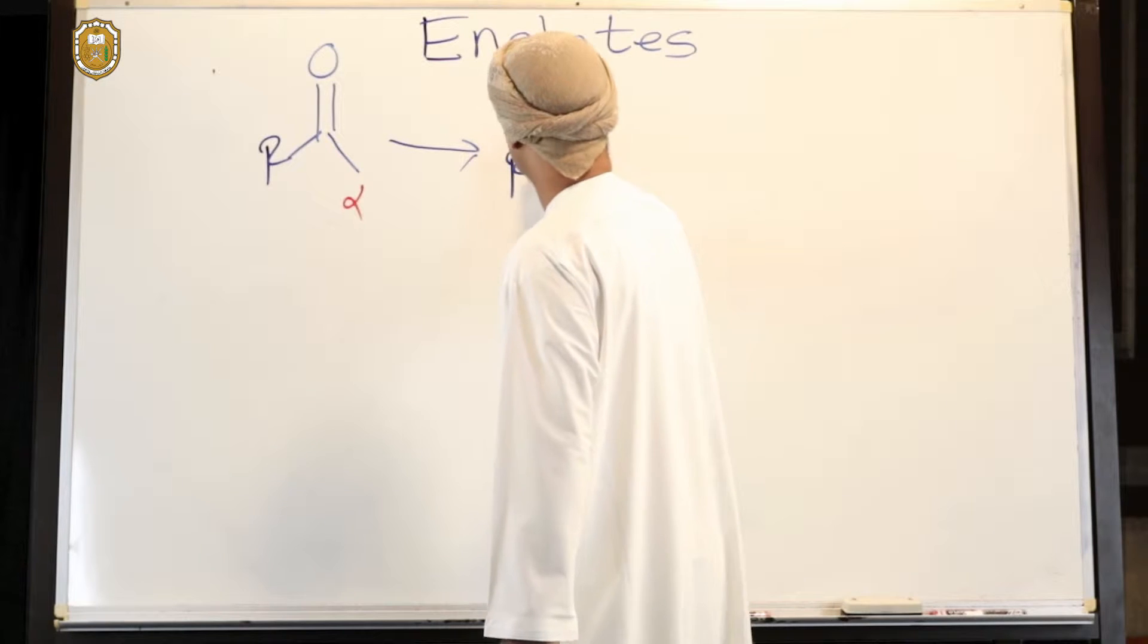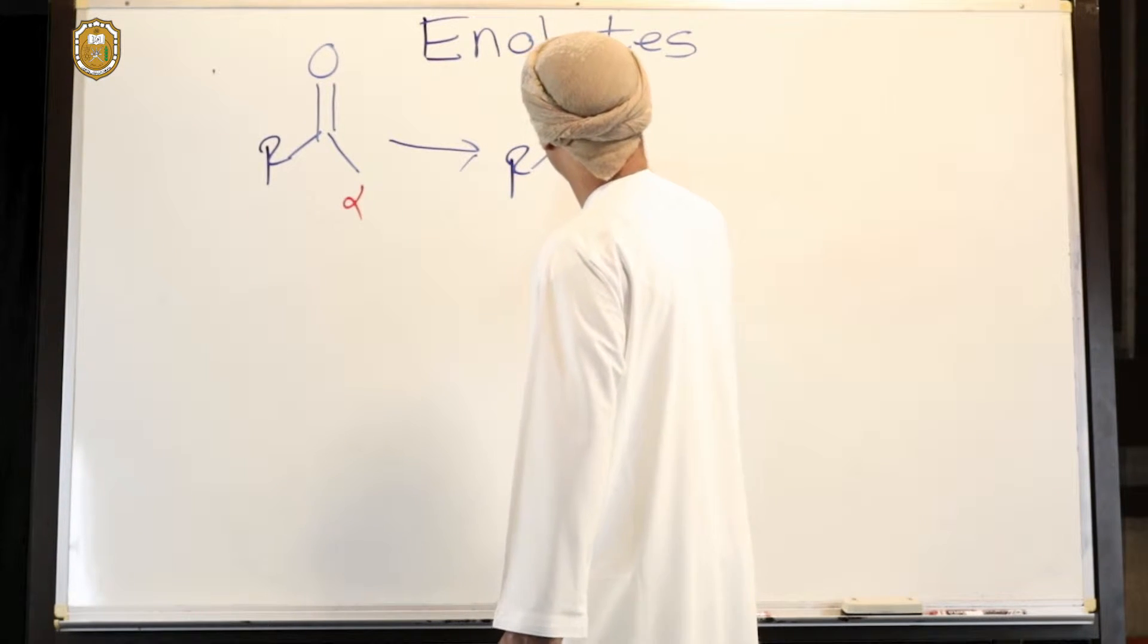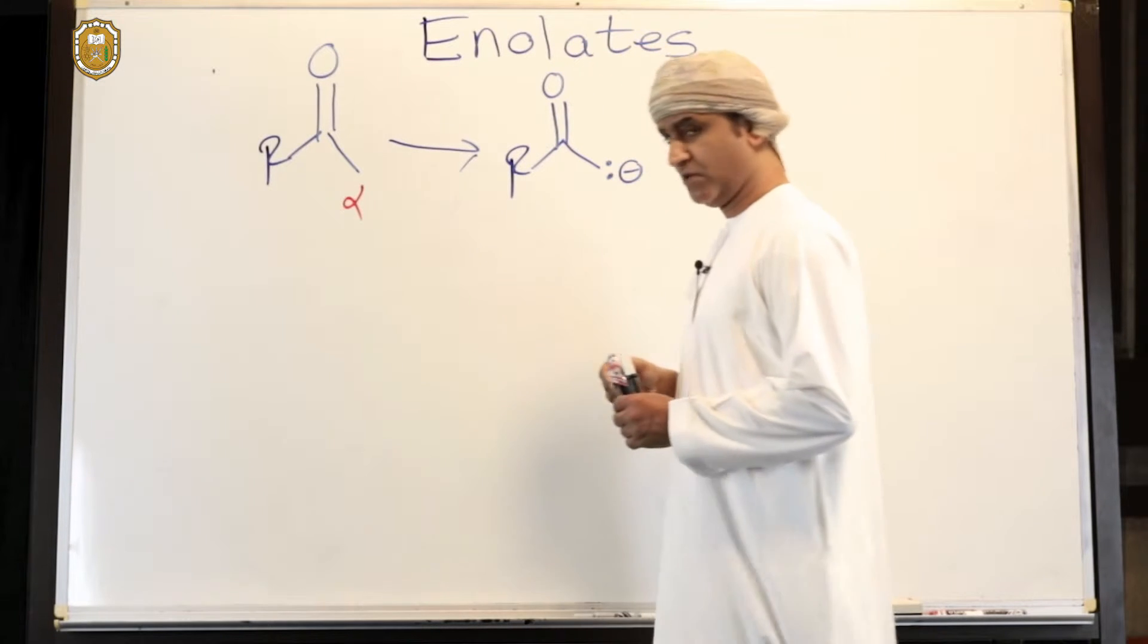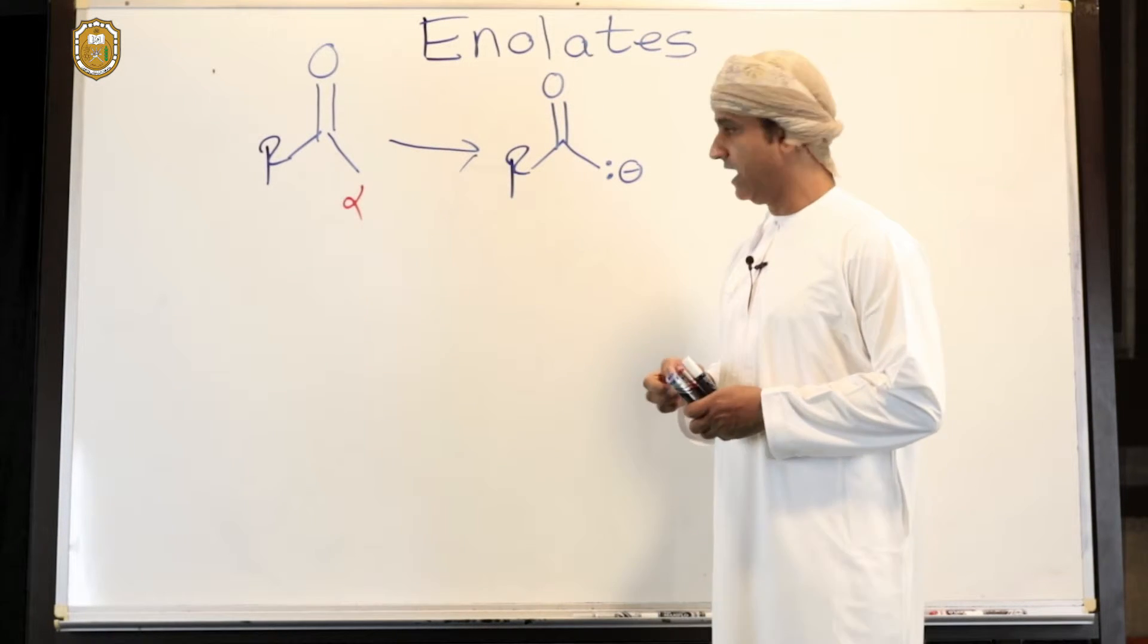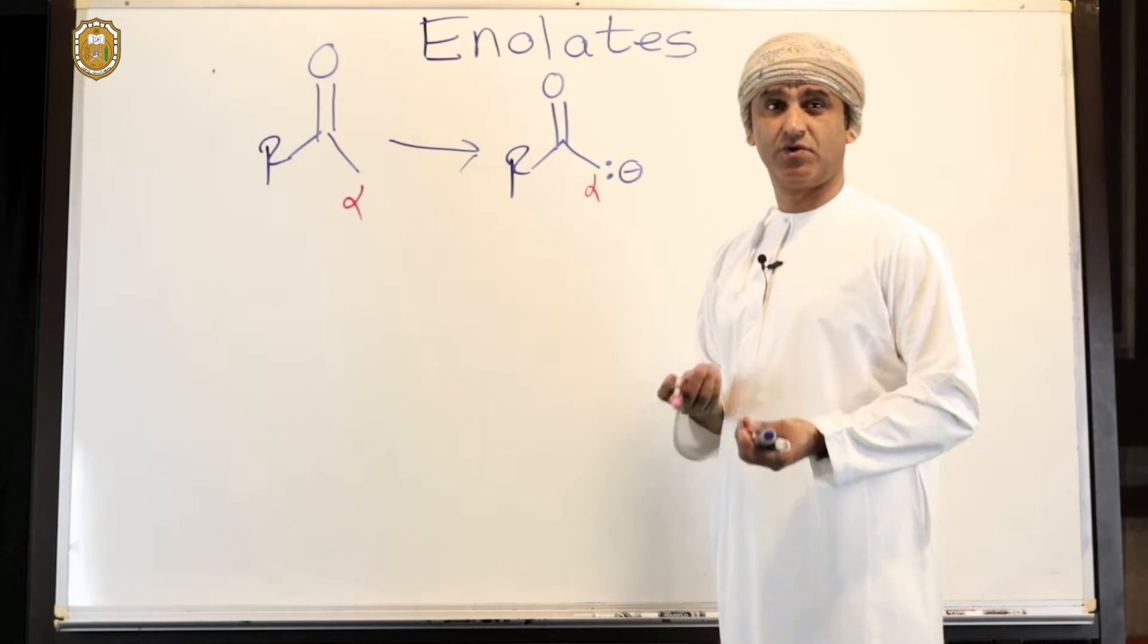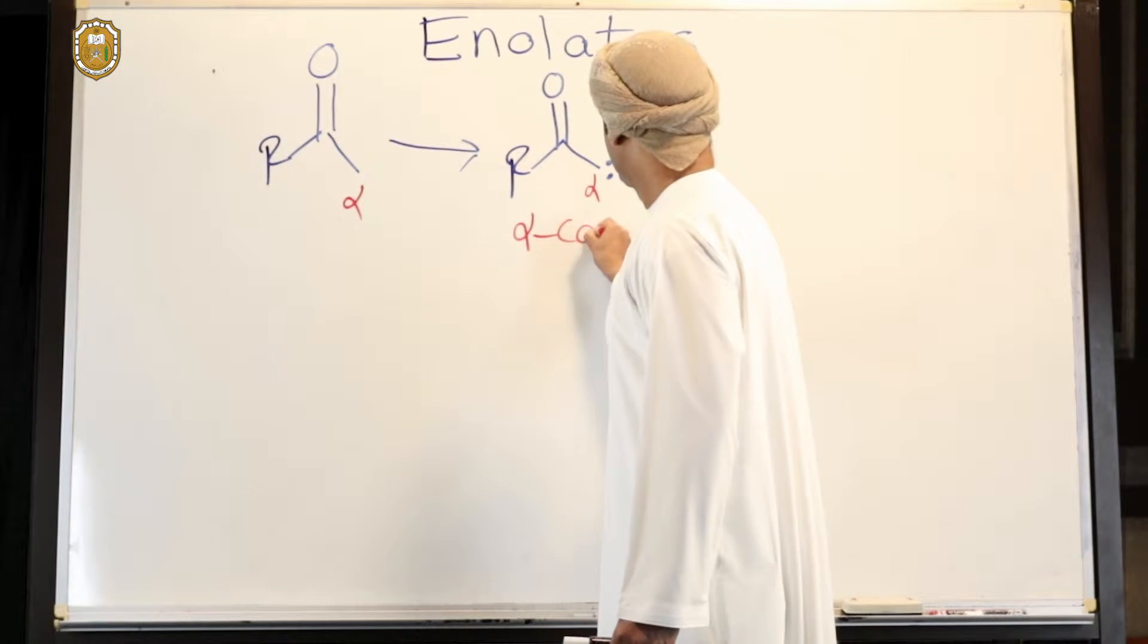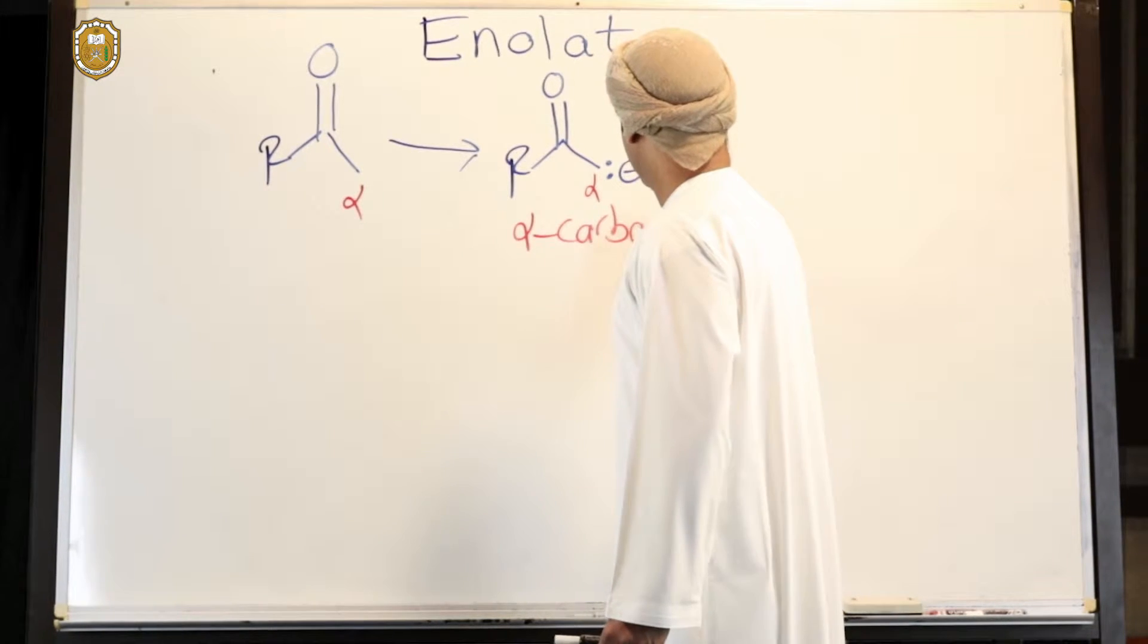then the corresponding conjugate base is formed, which is this one. This is the corresponding conjugate base where the alpha carbon has a lone pair. Therefore it's called alpha carbanion. This intermediate is actually called alpha carbanion.